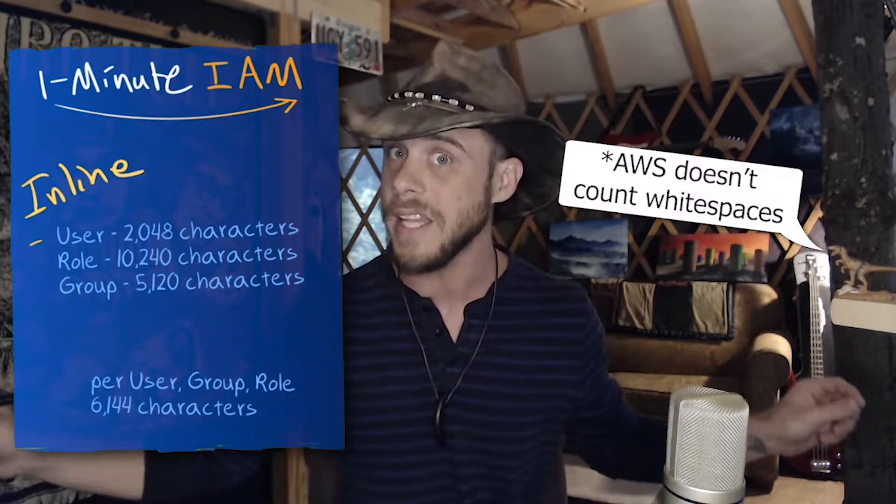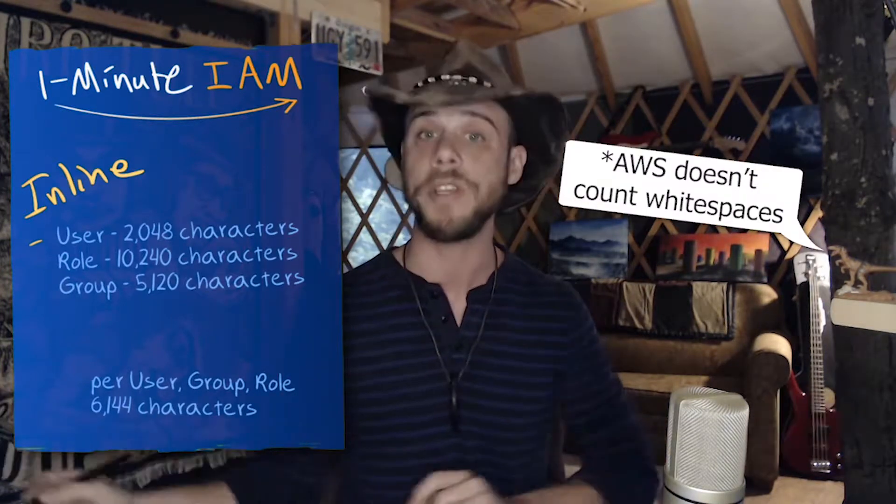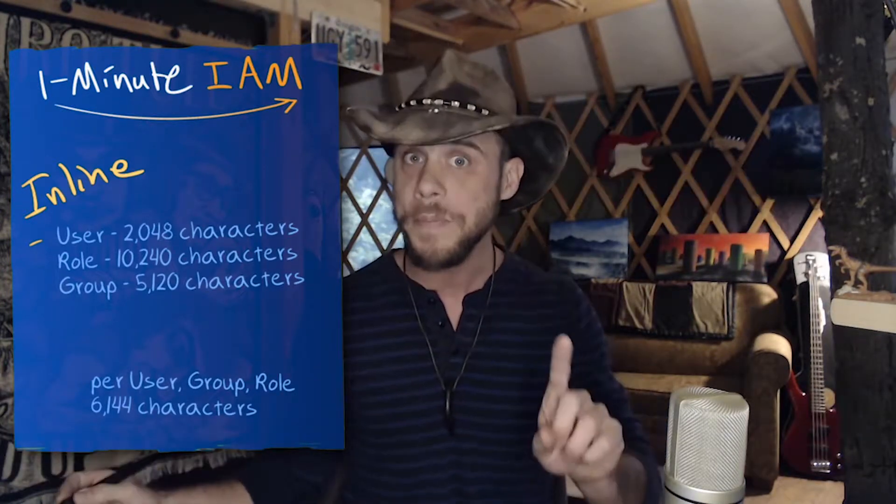To understand this, let's start by looking at inline policies. For a user, you're talking about 2,048 characters, and that is across all of the inline policies. So it could be one large policy or multiple smaller policies that add up to this particular limit.